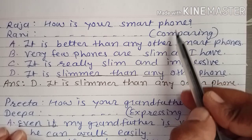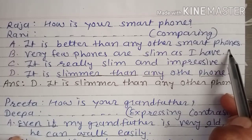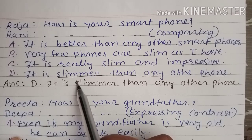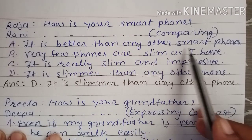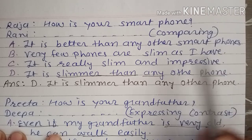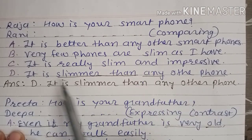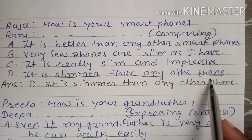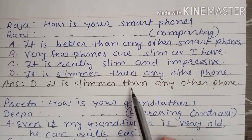Next dialogue: 'How is your smartphone?' The function required is comparing. The correct answer is: 'It is slimmer than any other phone.' The comparative form 'slimmer than' expresses comparison. Options like 'It is really slim and impressive' describe but do not compare, while 'It is slimmer than any other phone' correctly uses the comparative keyword.